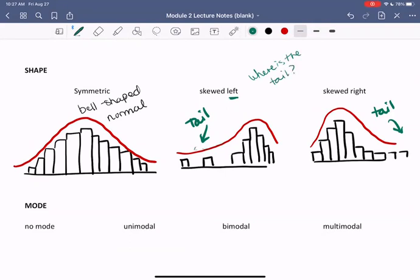Where has the data sort of fallen off the edge? If that data wasn't there, it would look nice and normal. So the data is skewed or pulled to the left.